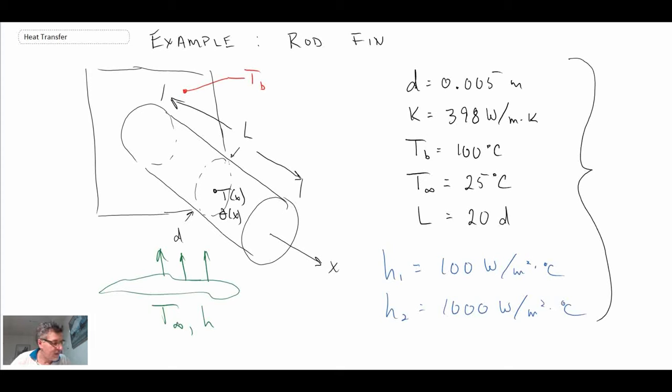Okay, so let's take a look at the solution for a rod fin. And we'll begin by considering the convective environment h1 equals 100 watts per meter squared.